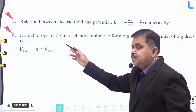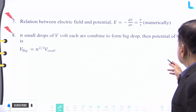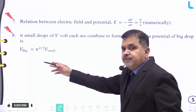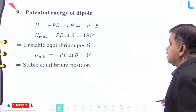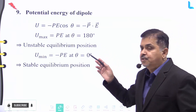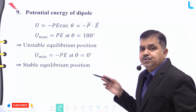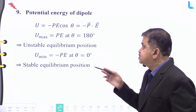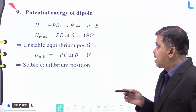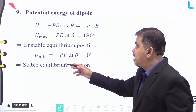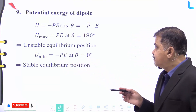Number eight: if n small drops of V volts each are combined to form a big drop, then the potential of the big drop is given by V_big = n^(2/3) · V_small. Number nine: the potential energy of a dipole is given by U = −p·cosθ = −p·E, where E is the electric field. The maximum potential energy is pE at θ = 180° (unstable equilibrium), and the minimum potential energy is −pE at θ = 0° (stable equilibrium).